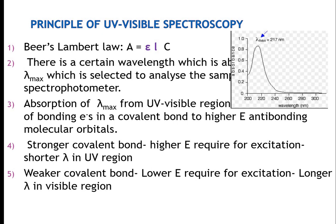The principle is that the sample should follow Beer-Lambert's law. There is a certain wavelength, lambda max, which is absorbed and selected to analyze the sample in the spectrophotometer. It gives a plot of absorbance versus wavelength, with lambda max at the point of maximum absorbance. Absorption at lambda max in the UV visible region corresponds to bonding electrons in a covalent bond being excited to higher anti-bonding molecular orbitals. Stronger covalent bonds require higher energy and give shorter lambda in the UV region.